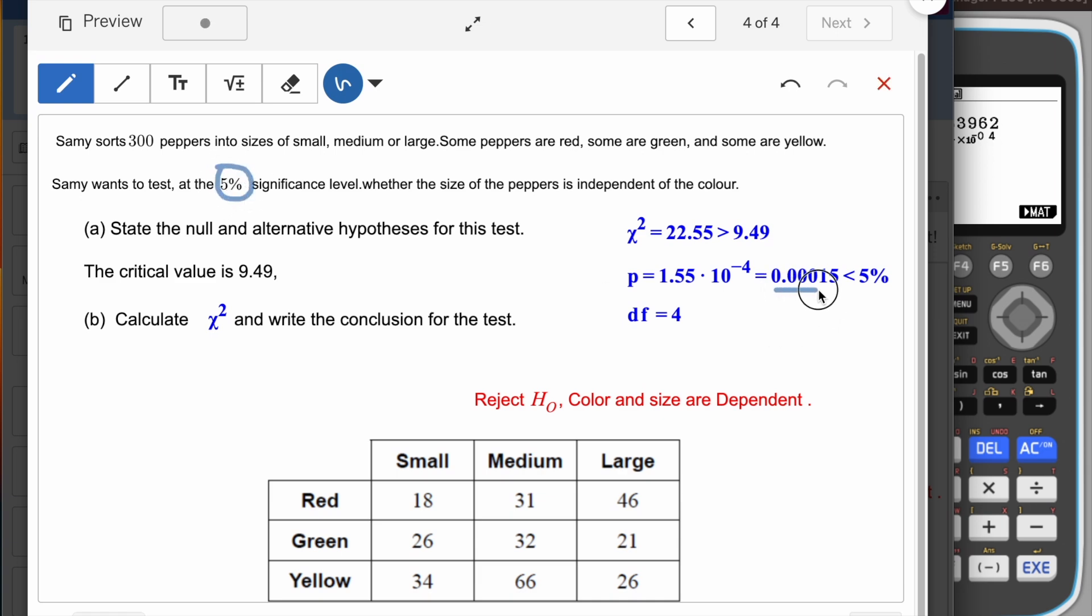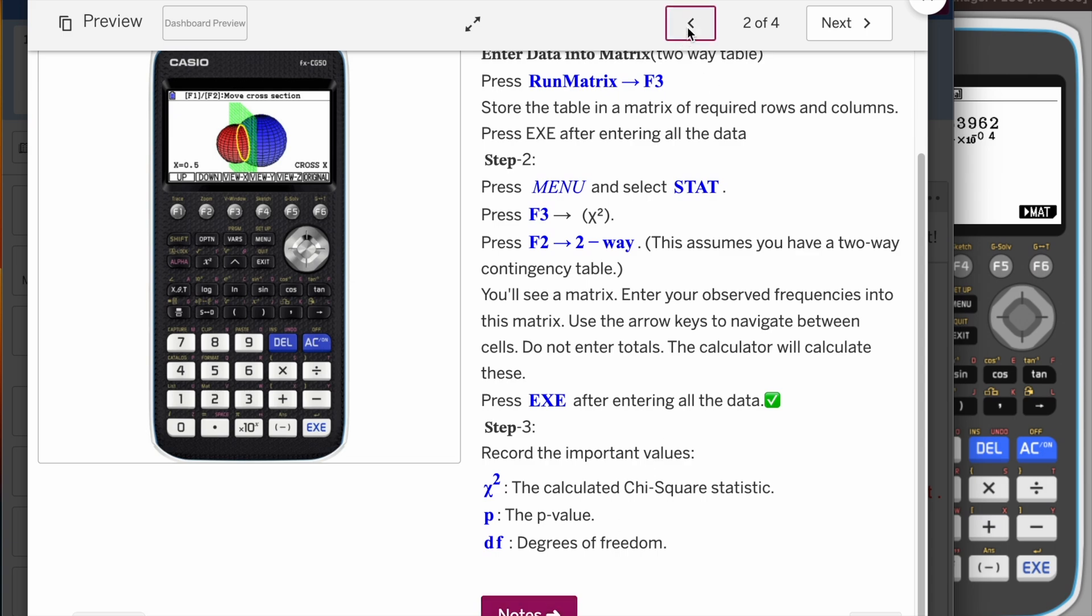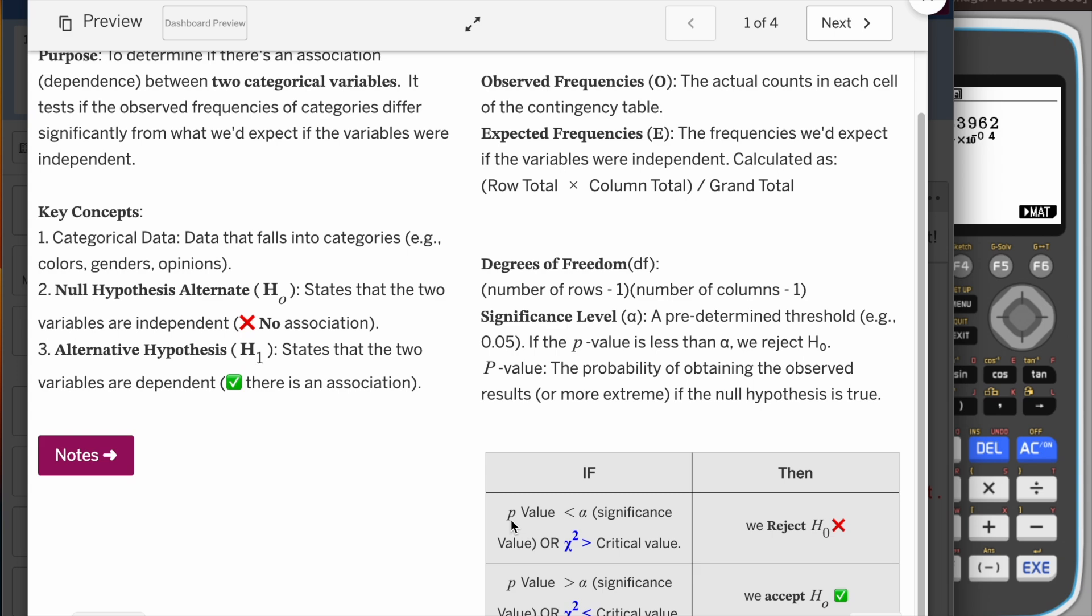I hope you remember from the table here. If you see that if the values of p are less than significance, you have to reject the null hypothesis.